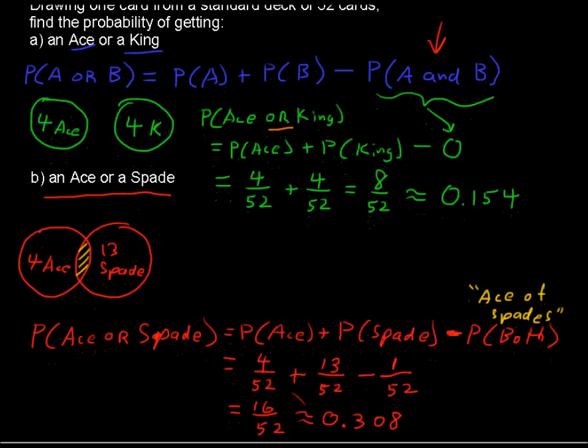Real quickly on that, I want to let you know about the way I prefer to look at these. The formula is great. It works every time. There's nothing wrong with the formula. But I just look at the situation. I would say there are 4 aces, plus 12 more that are spades, because we've already counted the ace of spades. And so then I would get my 16 there. 4 plus 12 equals the 16. And that's just the way I prefer to do it. You might like that as well. But the formula is great also. And it's important to understand where these formulas and where the probabilities come from.